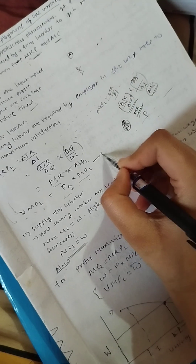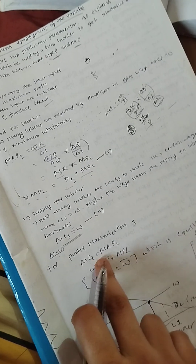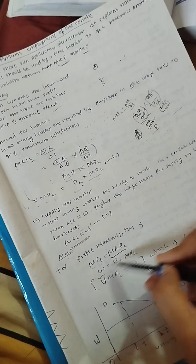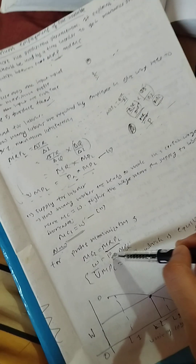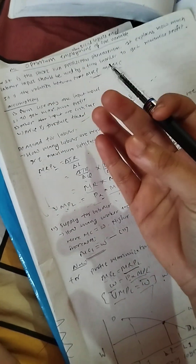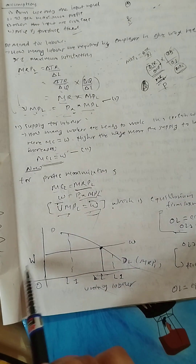So profit maximization condition: equation 1 is MRPL = P×MPL and equation 2 is MCL = W. Setting these equal gives us the optimum employment condition. This is the most important numerical method for the longer exam question - applying these conditions to find how much labor a firm should employ to maximize profit.